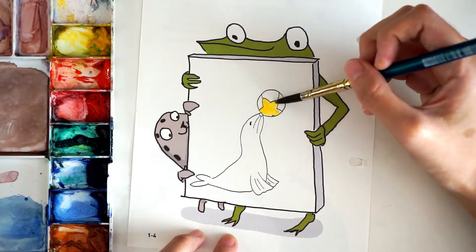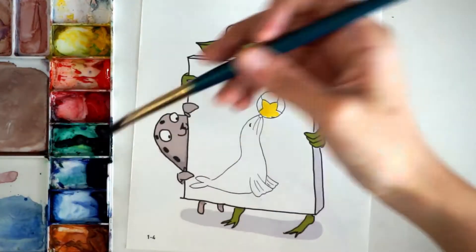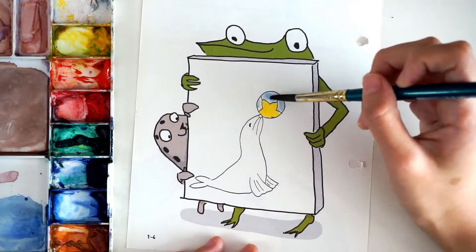Now we're going to color in the seal. We're using watercolour, but you can use your favorite crayons, pens, paints, or pencils to do the job.